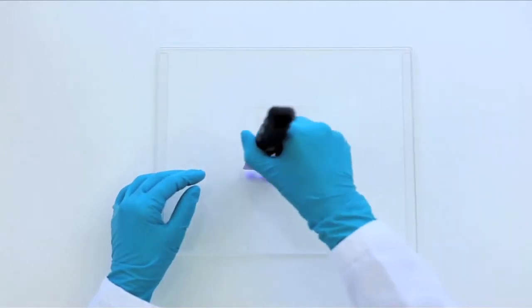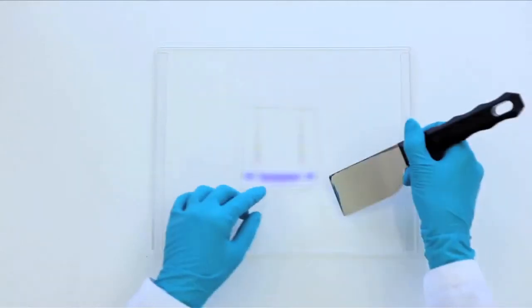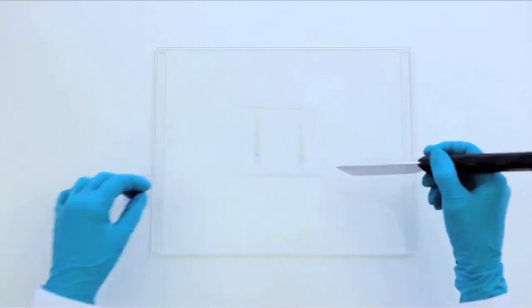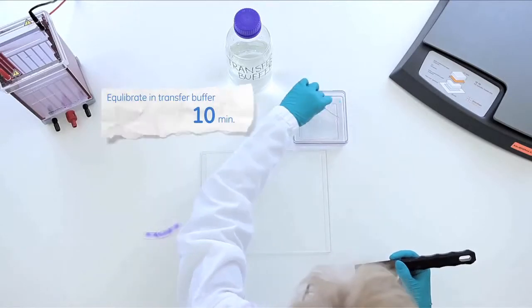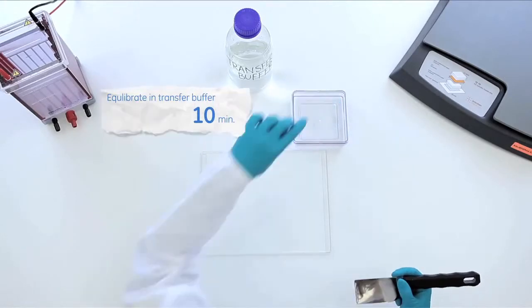First, prepare the gel for blotting by trimming off excess gel. One corner of the gel can be cut off to help with orientation. Then, equilibrate in transfer buffer for 10 minutes to maintain gel shape.